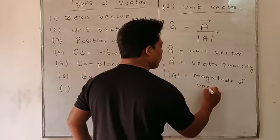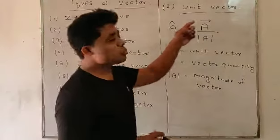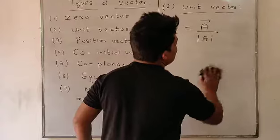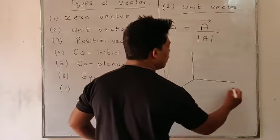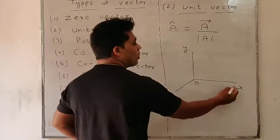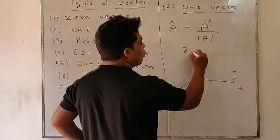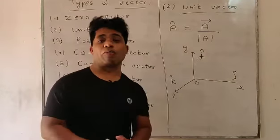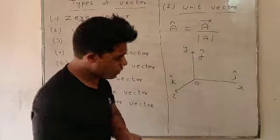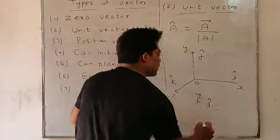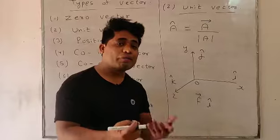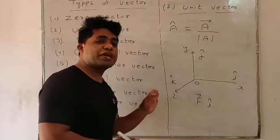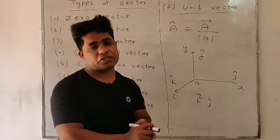Unit vectors are classified in three parts along the x, y, and z axes — they also play an important role in indicating direction. Along the x-axis we use i-cap, along the y-axis we use j-cap, and along the z-axis we use k-cap. So if I write F i-cap, it means force belongs to the x-axis; F j-cap means force belongs to the y-axis; F k-cap means force belongs to the z-axis.